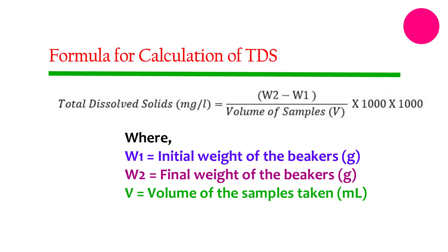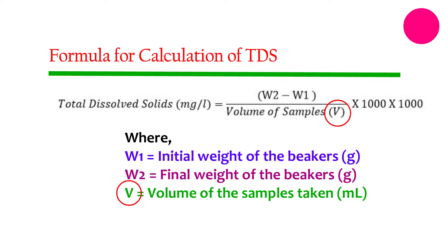The formula for TDS is expressed in milligrams per litre, and is: TDS equals W2 minus W1, divided by the volume of the sample, multiplied by 1000 into 1000. Where W1 refers to the initial weight of the beaker, W2 is the final weight of the beaker, and V stands for the volume of the sample taken.